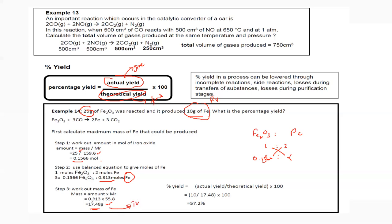Theoretically we should get 17.48 grams, but practically we are only getting 10 grams. So the percentage yield equals the actual value (10) divided by the theoretical value (17.48), multiplied by 100, which gives 57.2%.